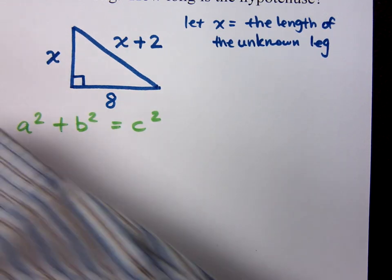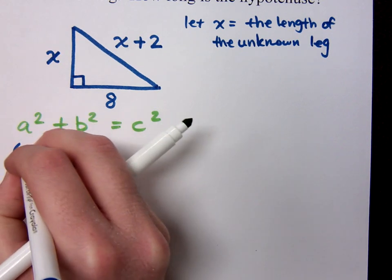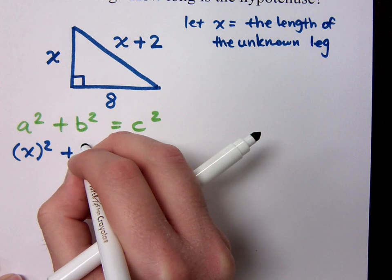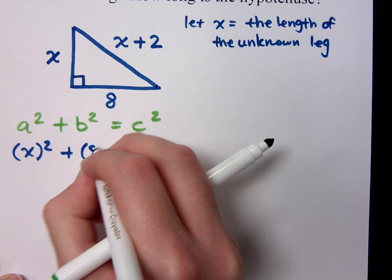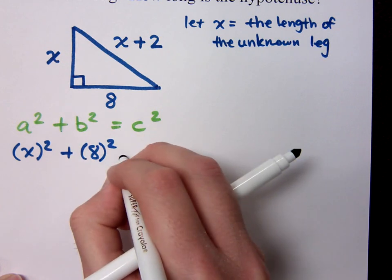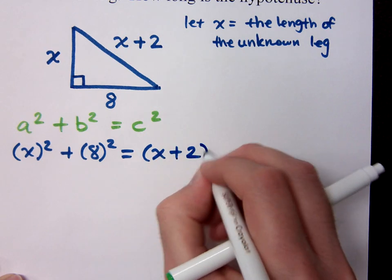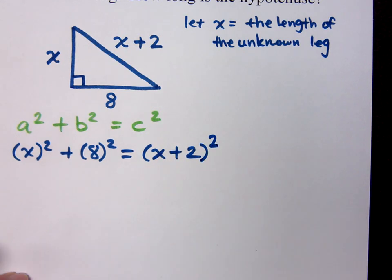But I'm going to be replacing this with what I have. So that means x squared plus my b, my other leg, is 8, so 8 squared, equals x plus 2 quantity squared.